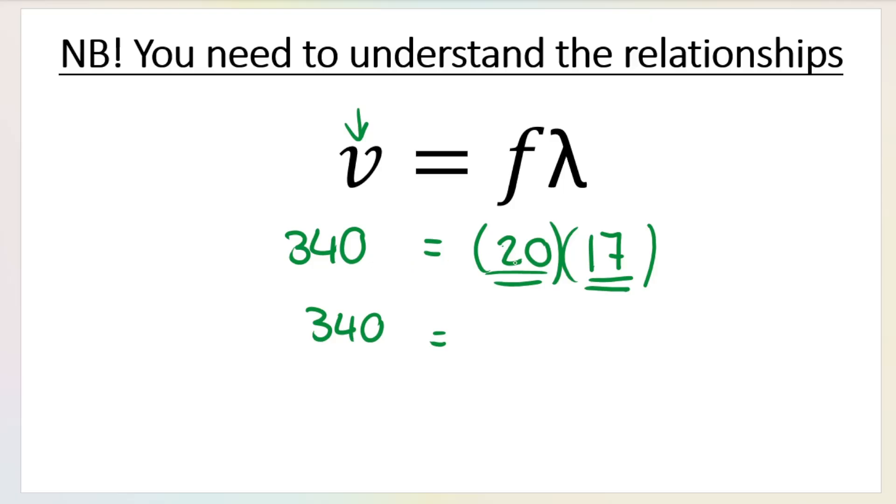Remember, the speed of sound in air is 340, so it's going to stay 340. But what happens if I halve the frequency? Half of 20 is 10. If I halve the frequency, what must now happen to the wavelength? What multiplied by 10 gives me 340? This would be 34 now.